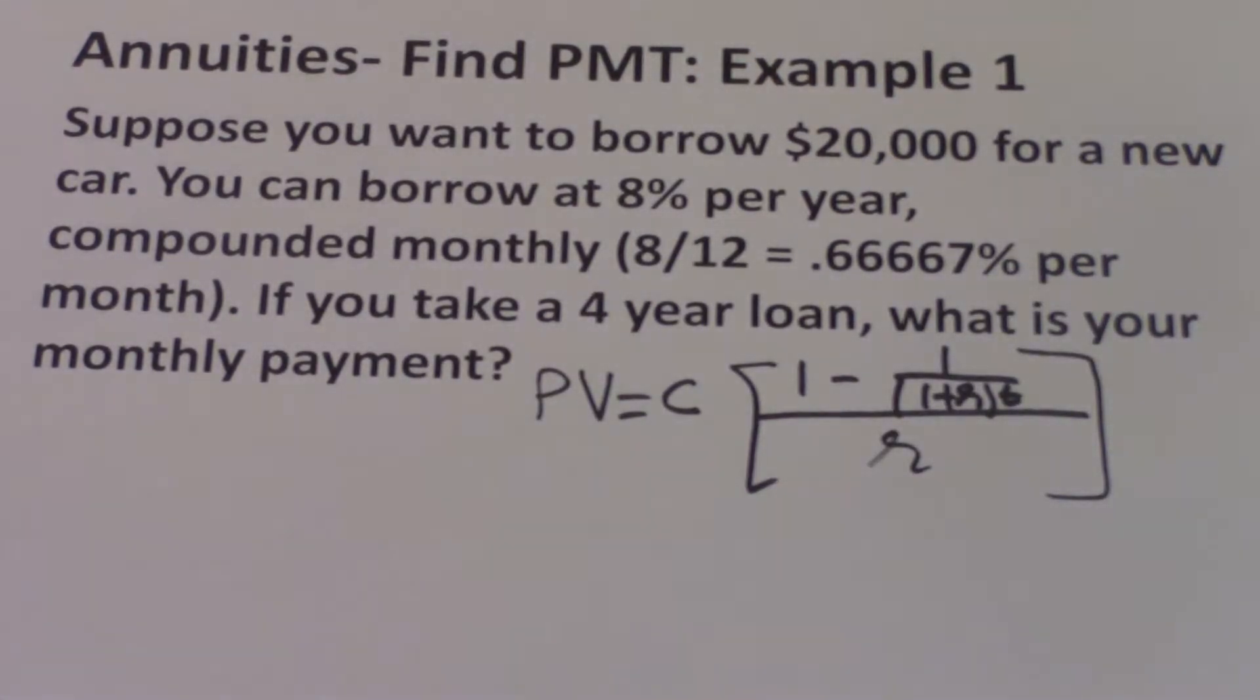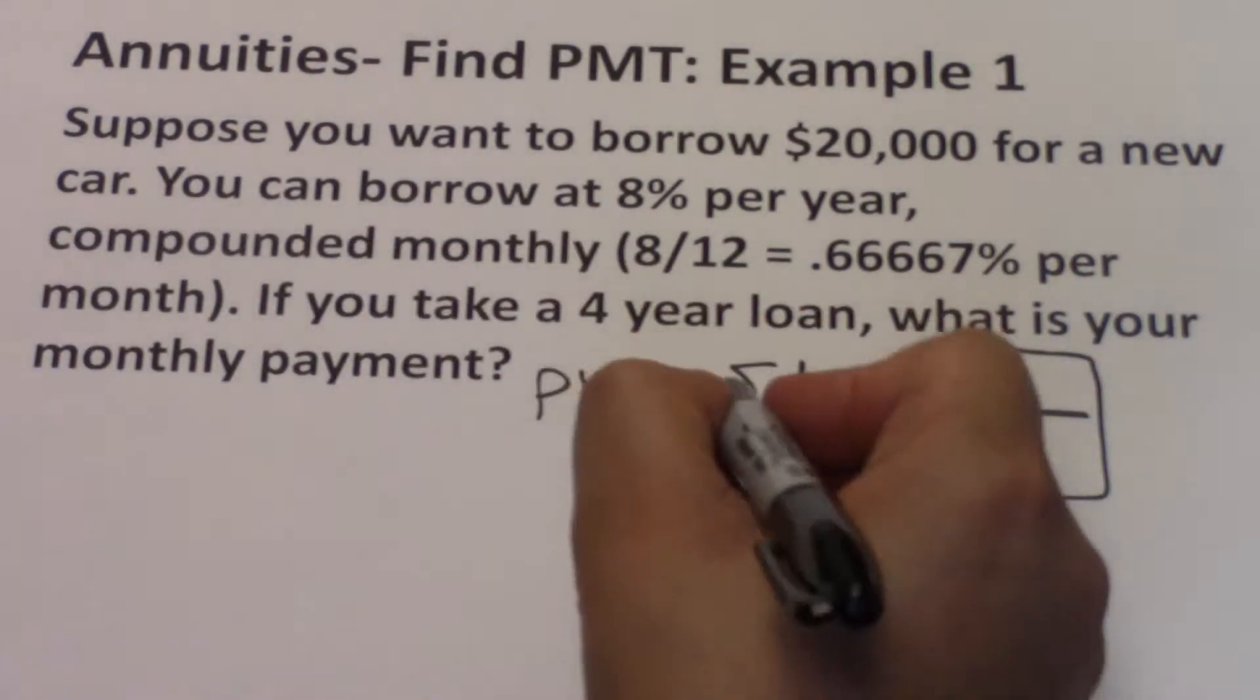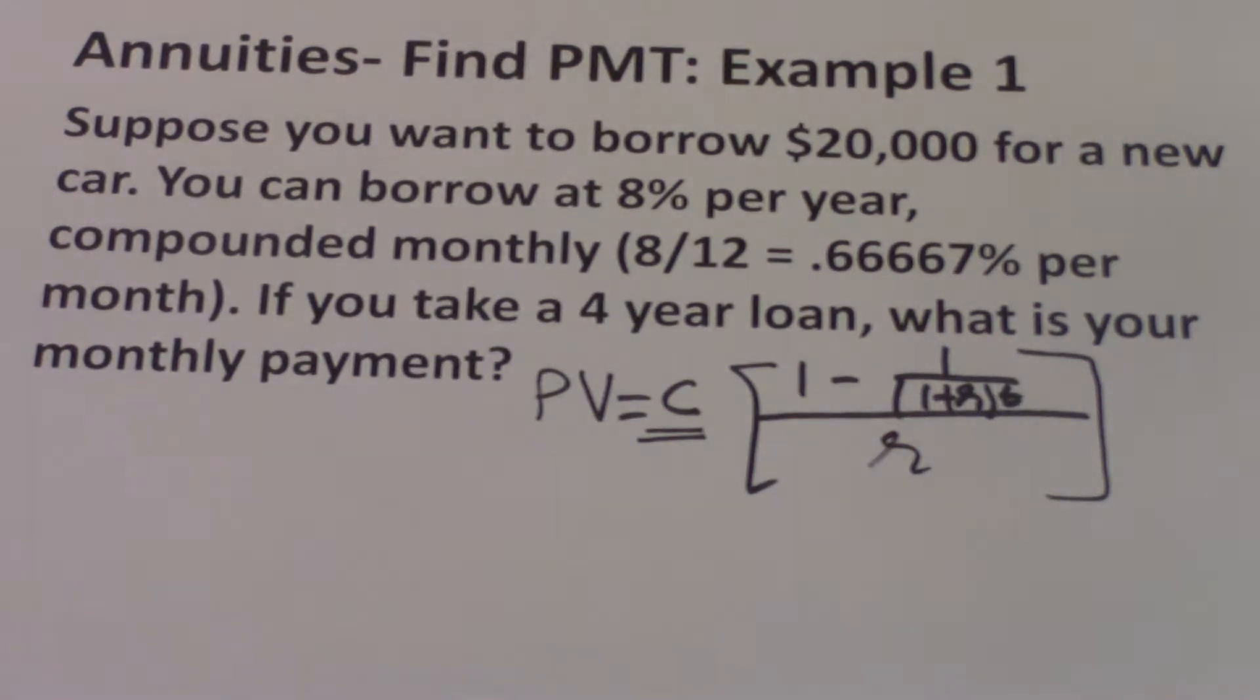What we are looking for here is C. C is a monthly number, so the R and the T need to also be monthly.